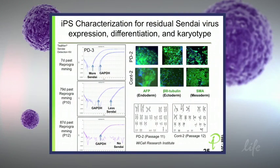Next we made sure that we don't see any residual Sendai virus — we used a Life kit to detect the virus. Seven days after reprogramming you have a nice expression of Sendai, but by passage 12, all the Sendai is gone and you can't detect it anymore. We also did an embryoid body differentiation assay to look at all three germ layers, showing we can derive tissues from the endo-, ecto-, and mesoderm, and we verified that the karyotype of these cells is still normal.